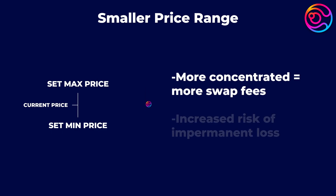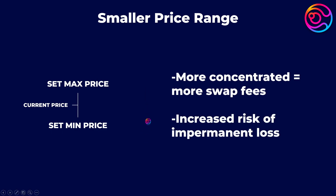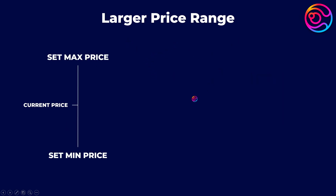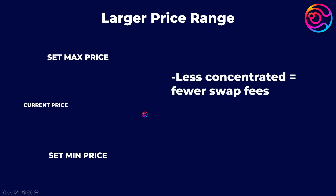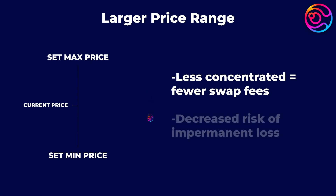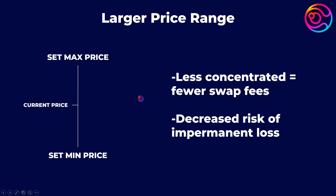However, a smaller range also increases the degree of impermanent loss and increases the risk that the current price moves outside of your set price range. A larger price range means that there is more price distance between your liquidity's minimum and maximum price. Larger price ranges concentrate liquidity less, meaning fewer swap fee earnings. However, it decreases the degree of impermanent loss and decreases the risk that the current price moves outside of your set price range.